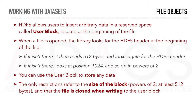HDF5 allows users to insert arbitrary data in a reserved space called the user block, located at the beginning of the file. When a file is opened, the library looks for the HDF5 header at the beginning. If it isn't there, it reads 512 bytes and looks again, then at position 1024, and so on in powers of 2. The user block size must be a power of 2 and at least 512 bytes, and the file must be closed when writing to it.